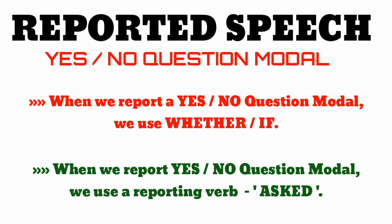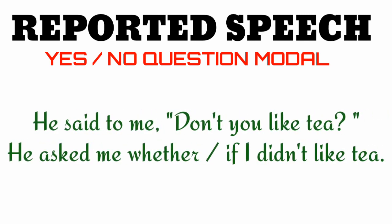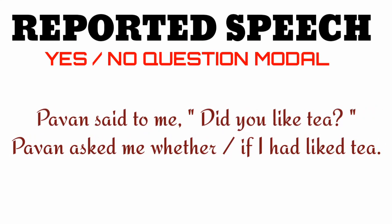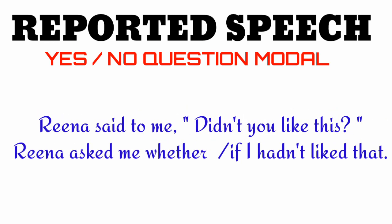Examples: 'Mohan said to me, do you like tea?' → Mohan asked me whether or if I liked tea. 'He said to me, don't you like tea?' → He asked me whether or if I didn't like tea. Pavan asked me whether or if I had liked tea. 'Rina said to me, didn't you like this?' → Rina asked me whether or if I hadn't liked that.